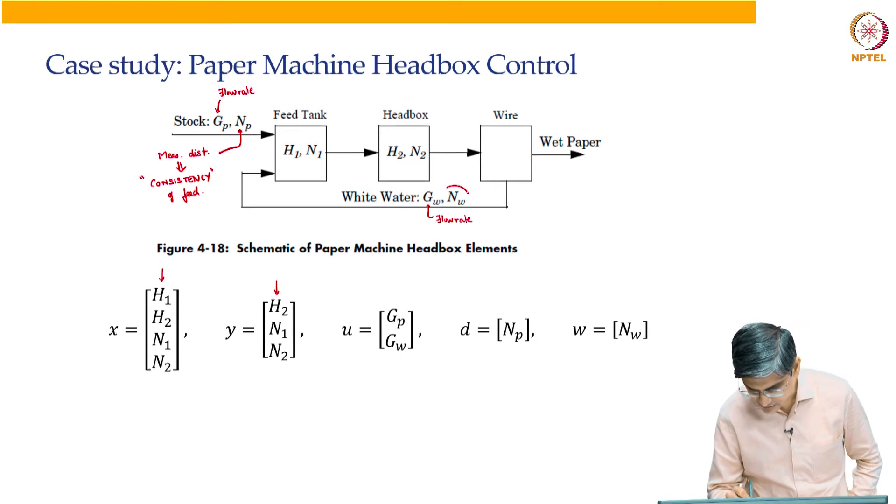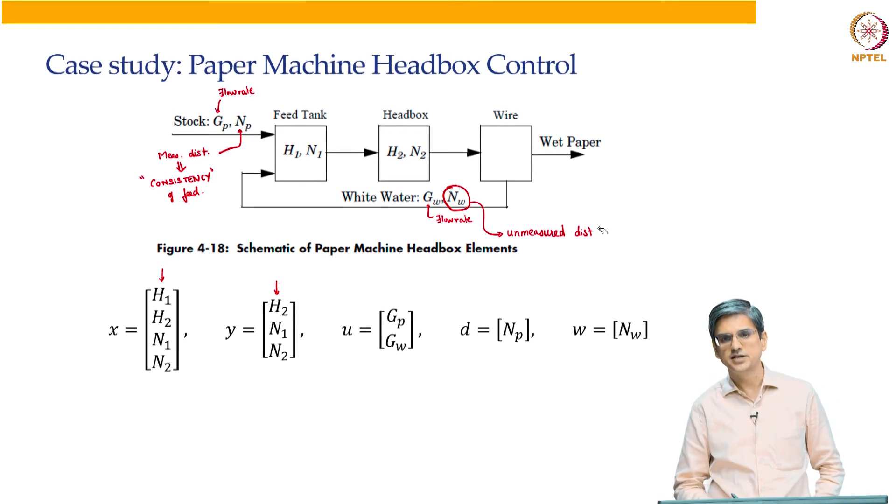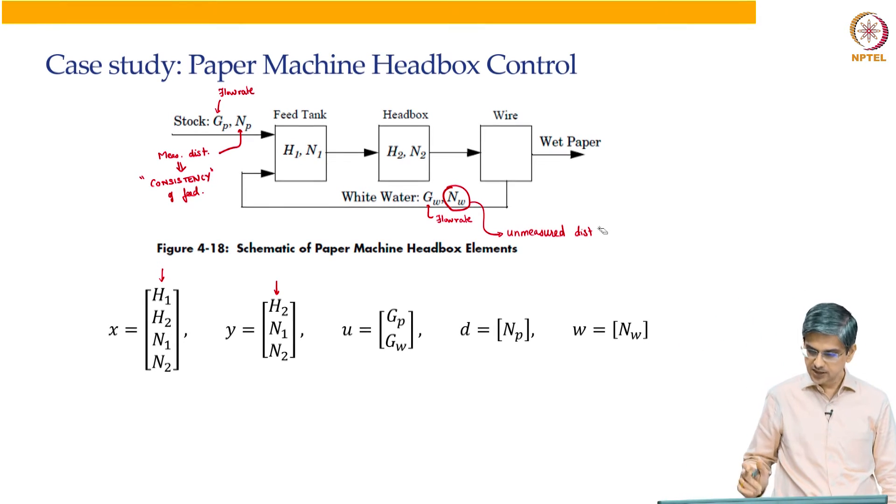The consistency of the inlet is a measured disturbance, and the unmeasured disturbance is NW, that is the consistency of the recycle stream. So that is the overall problem setup.